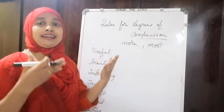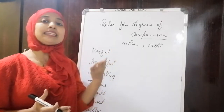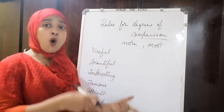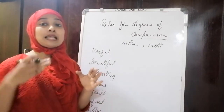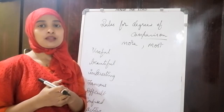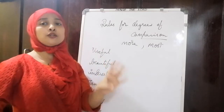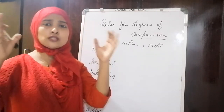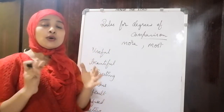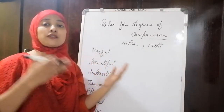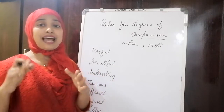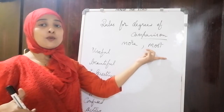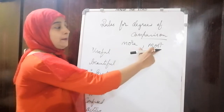For example: 'This book is useful' is the positive degree. 'This book is more useful than that' is comparative — comparing two things. 'Books are the most useful things' is superlative. Notice we do not say 'usefuler' or 'usefulest'. Instead, we use 'more useful' for comparative and 'most useful' for superlative.